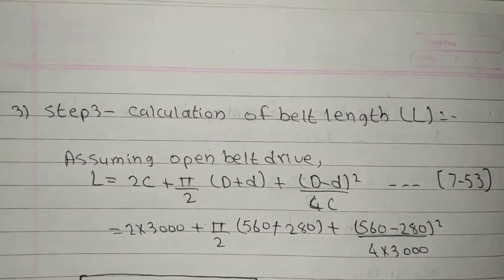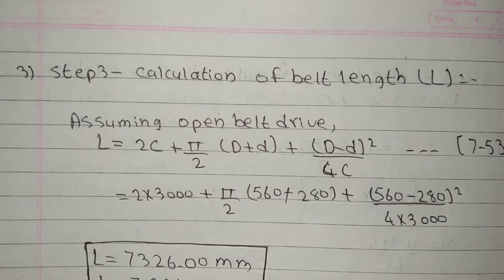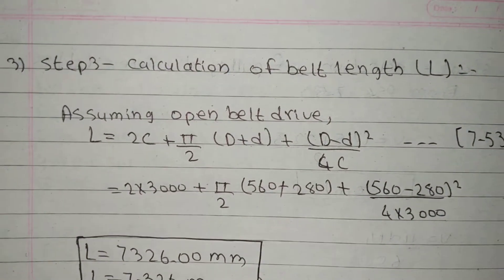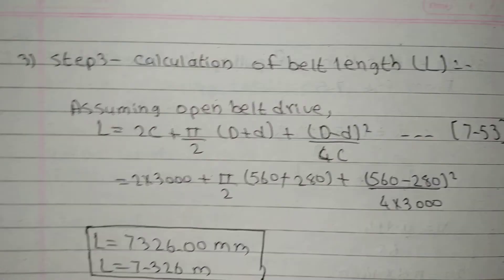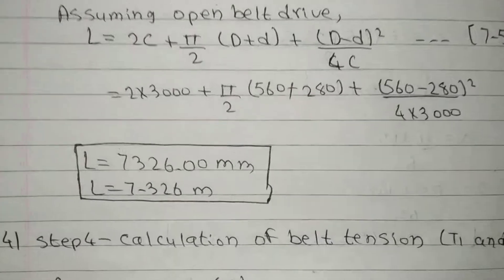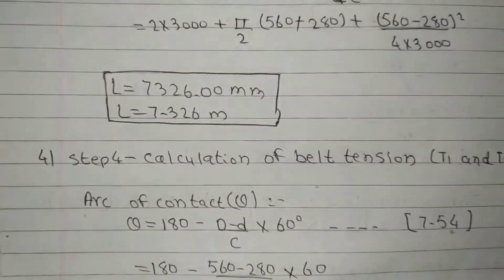Step 3: Calculation of belt length L. Assuming open belt drive, this formula is PSG 7.53. L equals 2C plus pi upon 2 times D plus d plus D minus d squared upon 4C. This equals 3,000 millimeters. L equals 7326 millimeters.